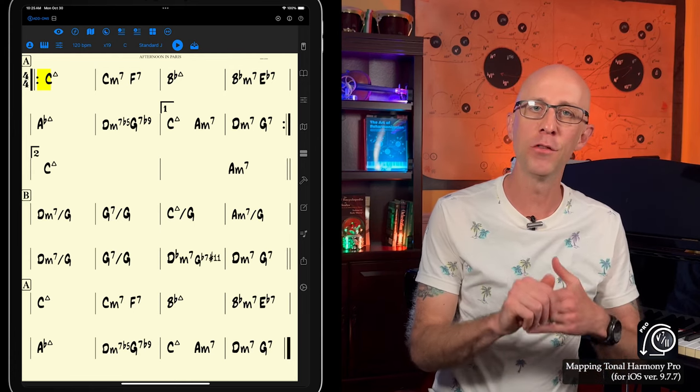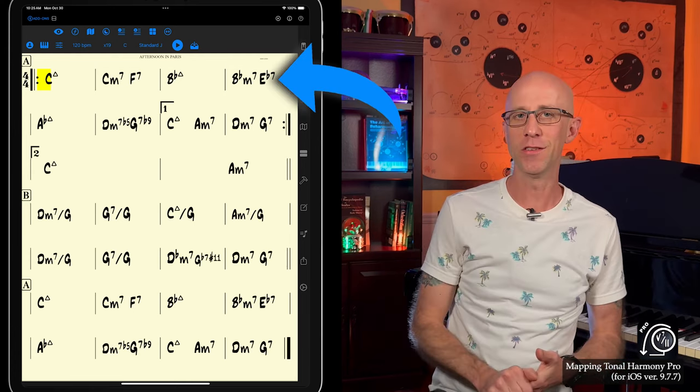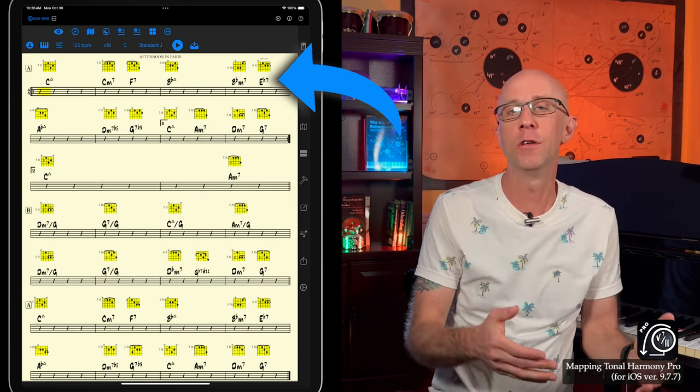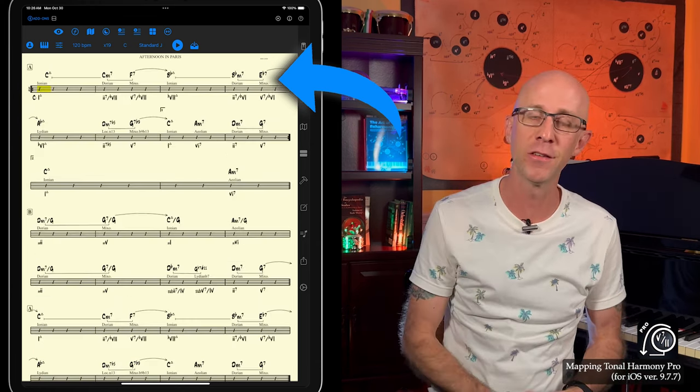Mapping Tonal Harmony Pro offers many ways that you can visualize a song. You can view a regular staff with chord changes, include guitar charts, view a full analysis, and so on.